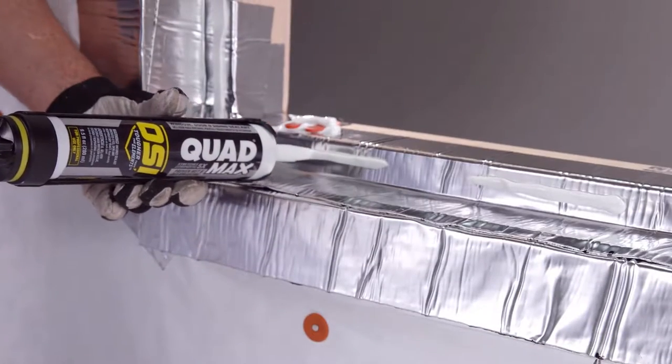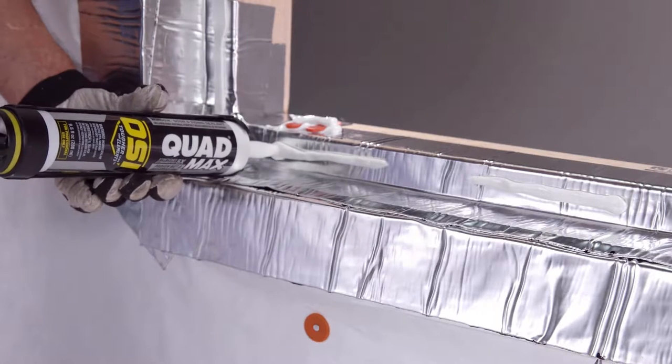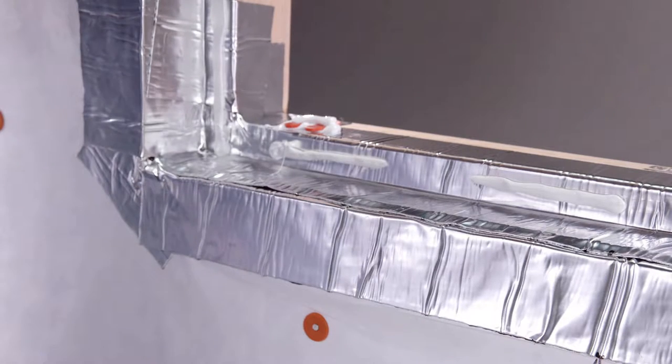Then apply a discontinuous, three-eighths inch rounded bead of OSI Quad Max along the bottom buck edge, leaving a minimum of a two inch gap at each corner and every six to eight inches. This provides a way for any water or moisture to drain to the exterior drainage surface.